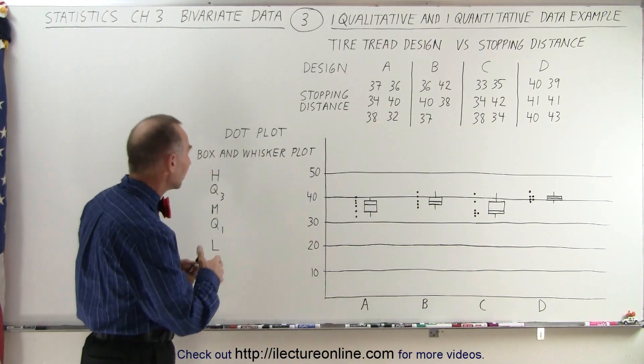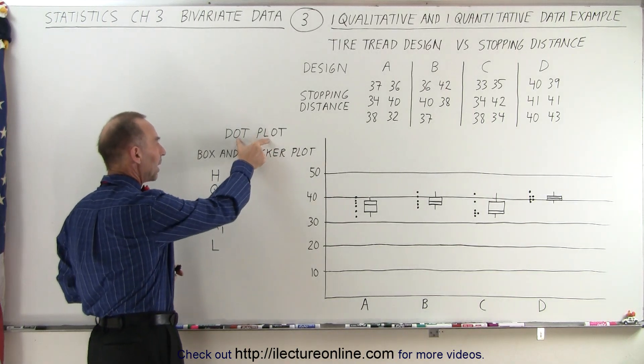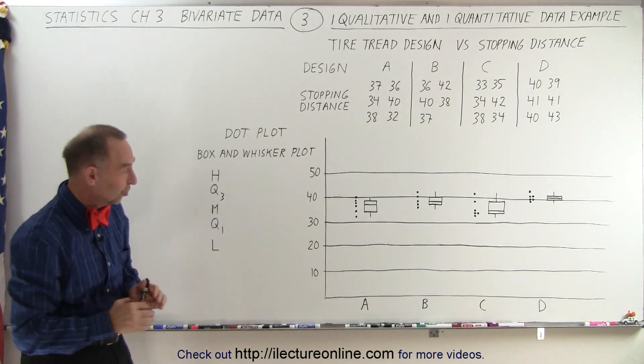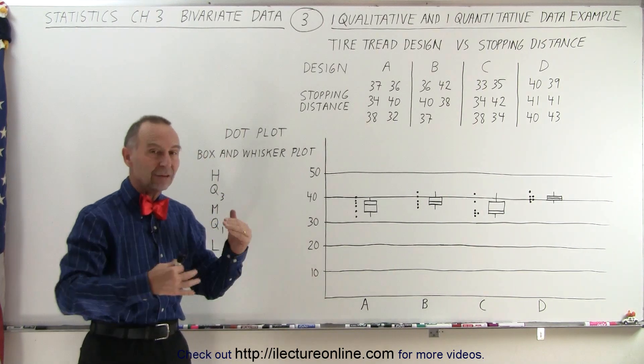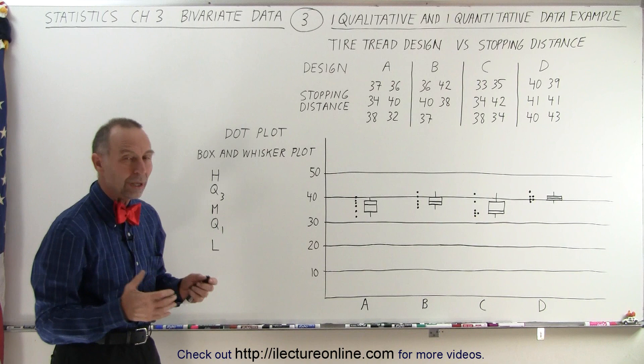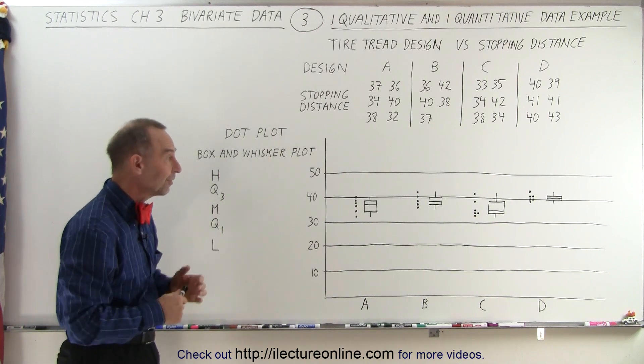We're also graphing it in two different ways using the dot plot and a box and whisker plot. Notice that we're starting at zero at the bottom here to give you a nice relative comparison between the four different kinds of tires.